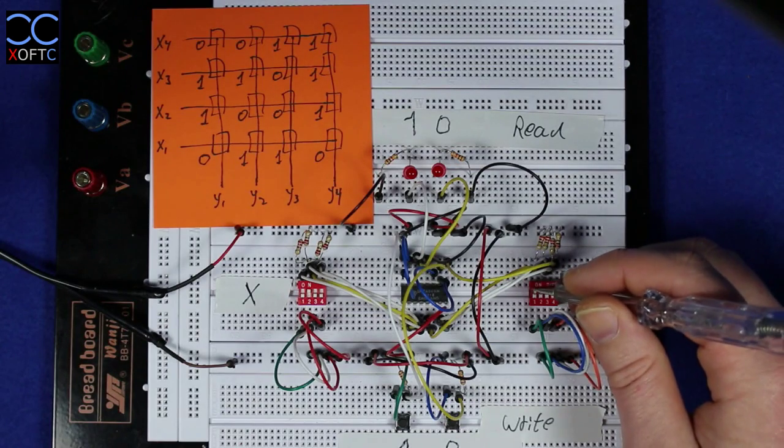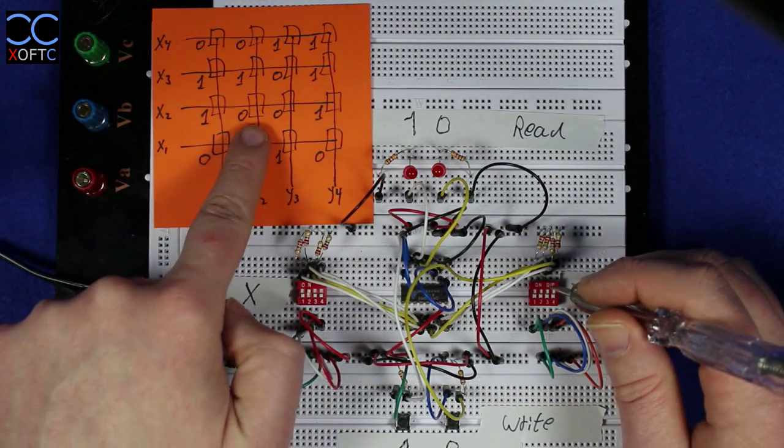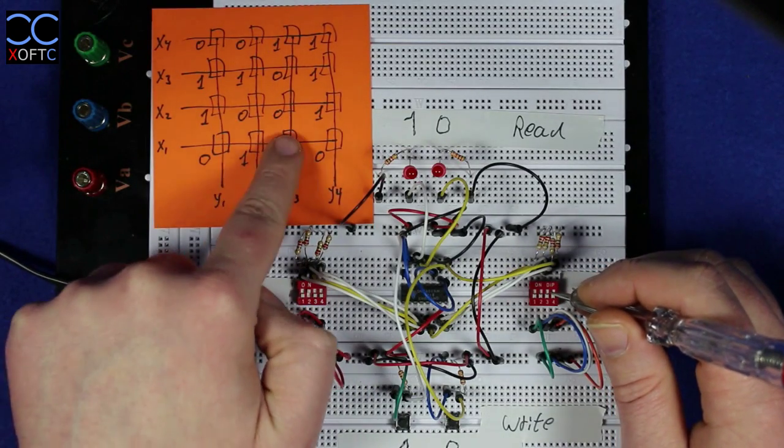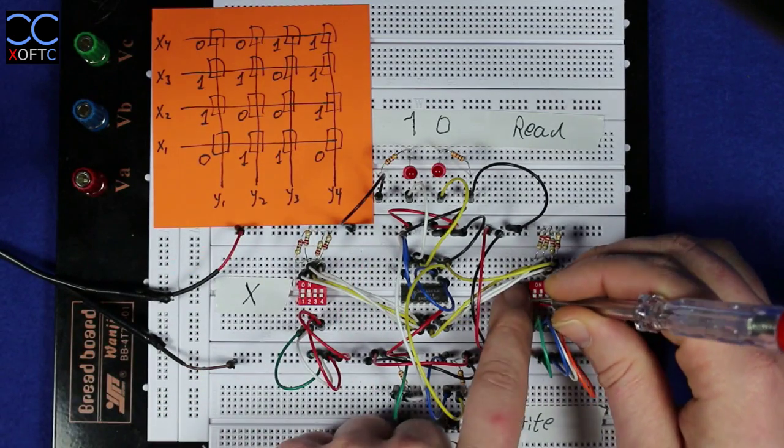So once I raise Y1 I should receive a one, and once I raise Y2 I should receive a zero, and Y3 should also give me a zero, and Y4 should give me a one. So let's see if it's correct.